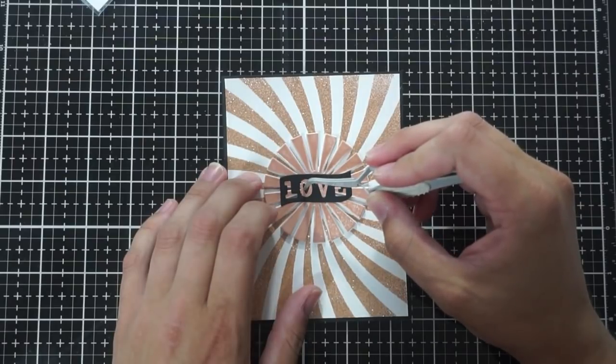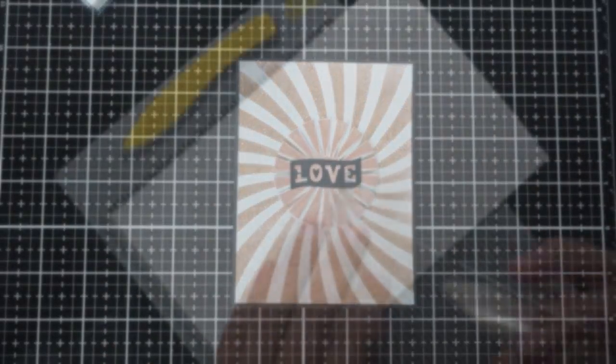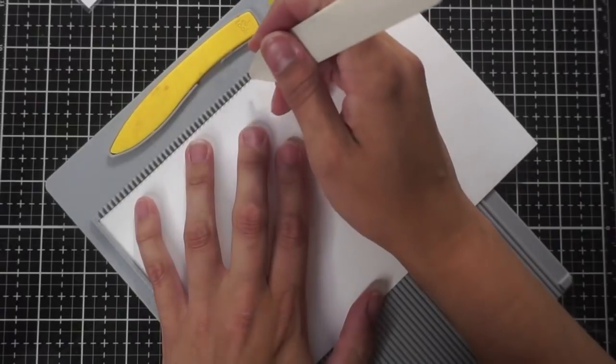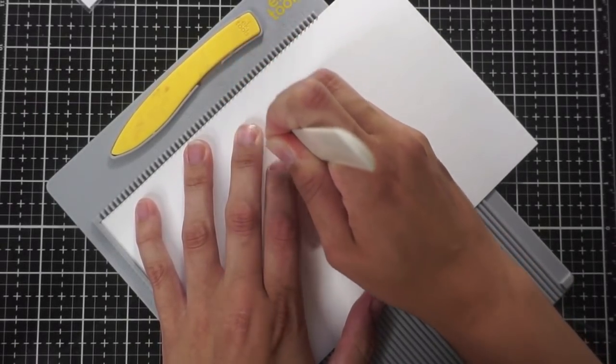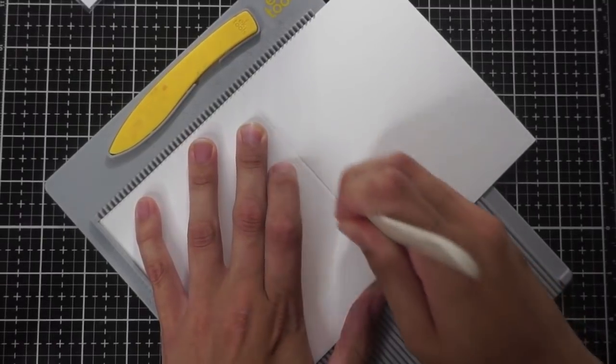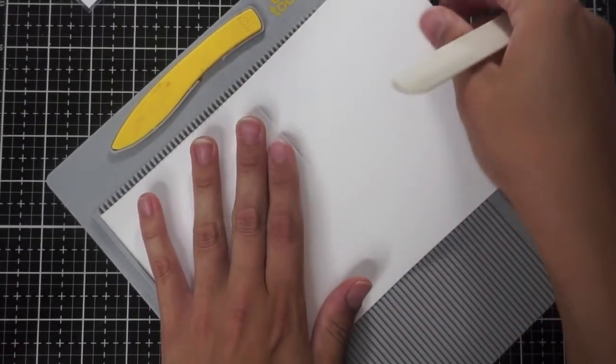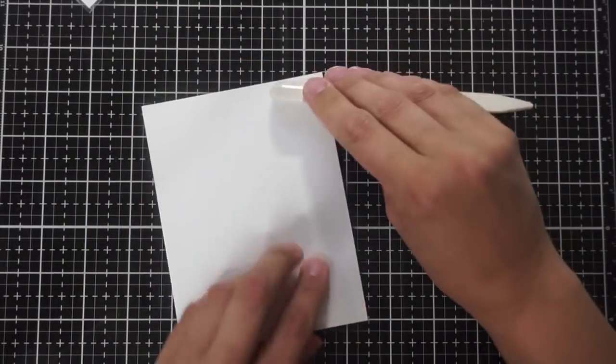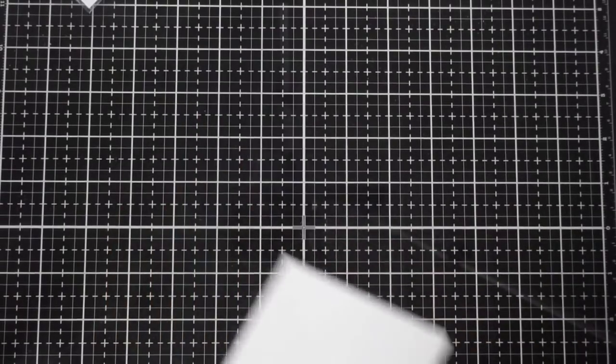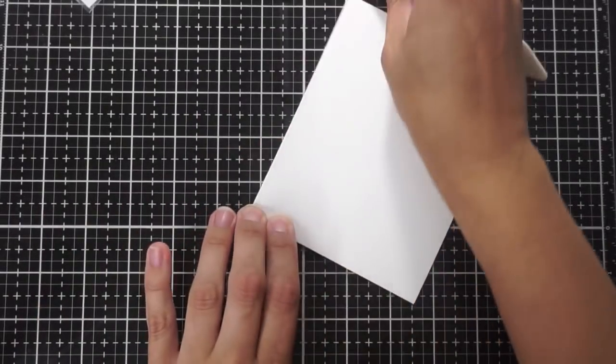So now we're going to make our card base and I have this piece of cardstock cut at five and a half by eight and a half. I'm going to score it the width way right at the A2 mark on my scoreboard which is four and a quarter. So now I have a four and a quarter by five and a half side folding card base.